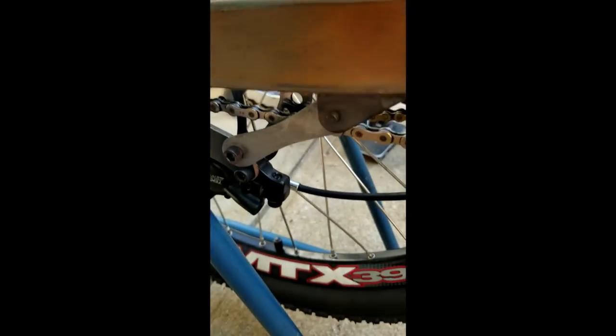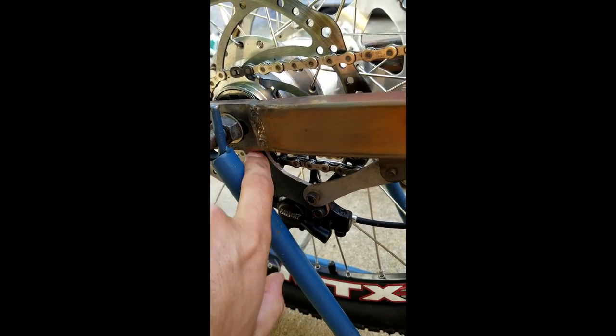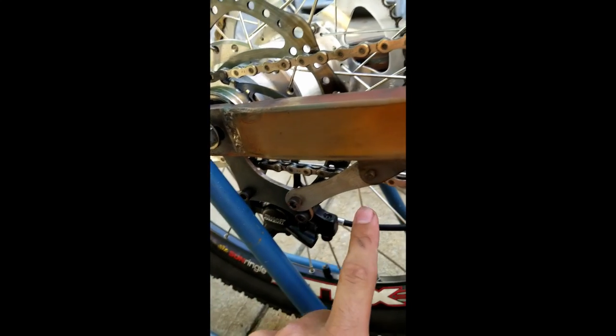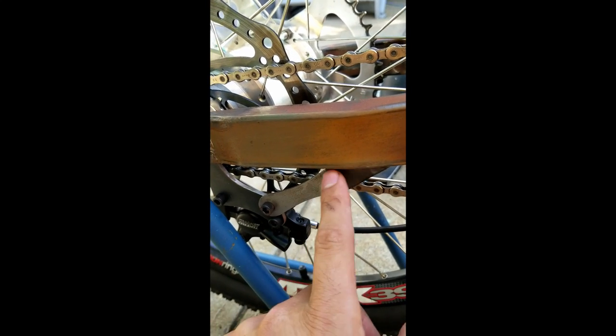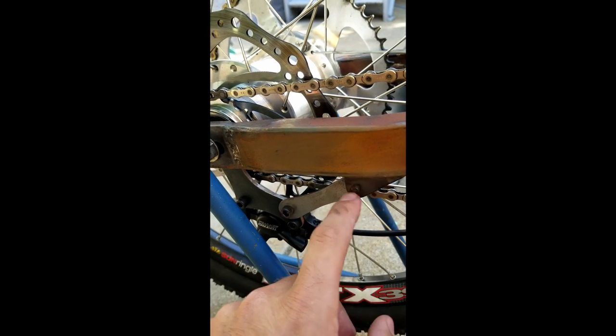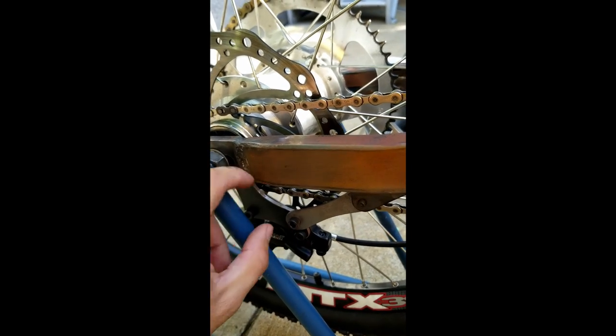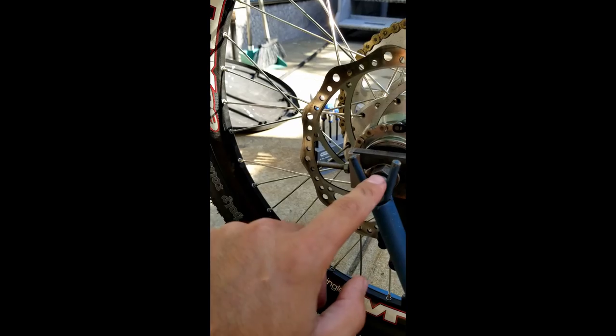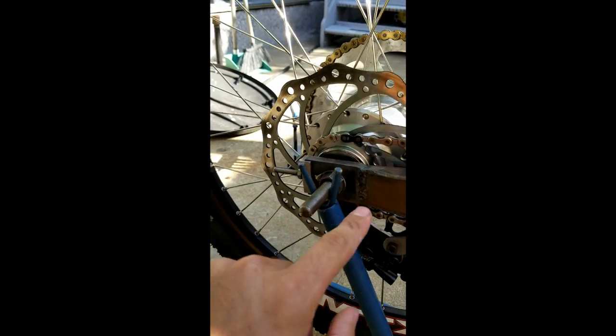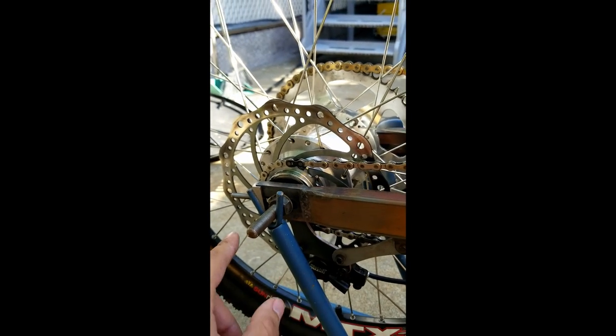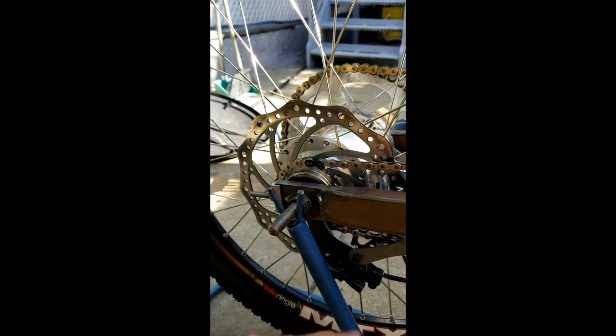And then I made these two brackets and then just this little linkage. You can pretty much make anything you want out of this linkage. But this linkage does allow this wheel to go back and forth and still maintain the radius.